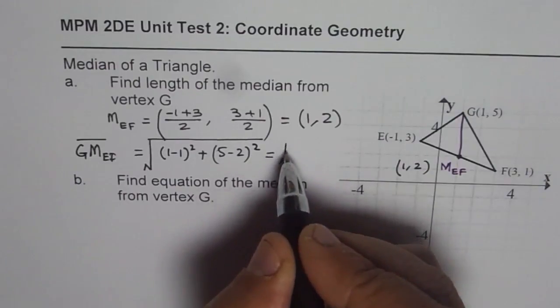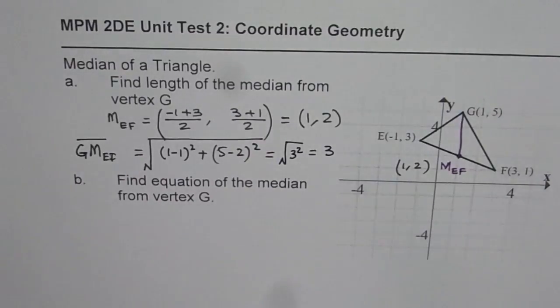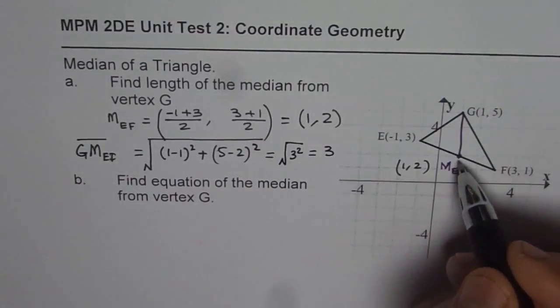So what we get here is square root of 5 minus 2 is 3. This is 0. 3 squared, which is 9. So it's square root of 3 squared, which is as expected, 3. So the length of the median for this particular case is 3. So that's the first part.